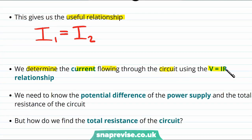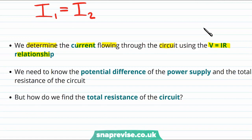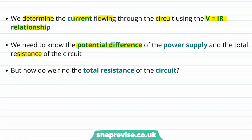We use the formula V equals IR. I is the current, V is the potential difference, and R is the total resistance of the circuit. But how do we find the total resistance of the circuit?